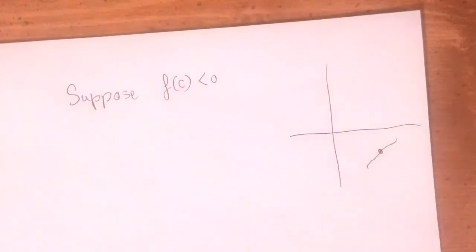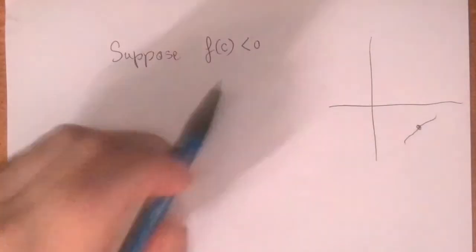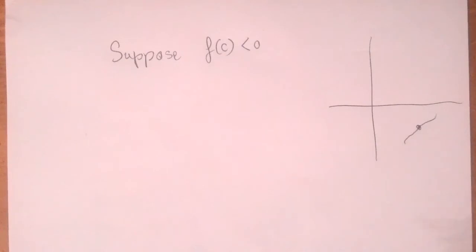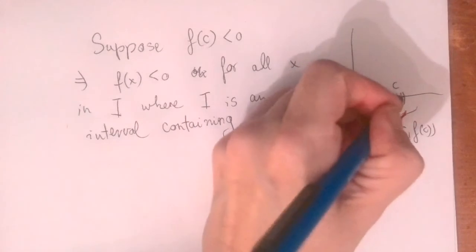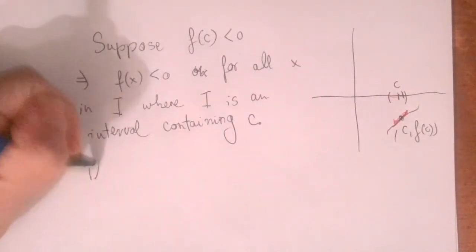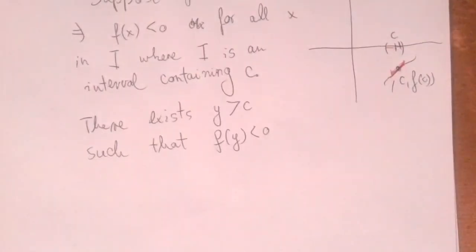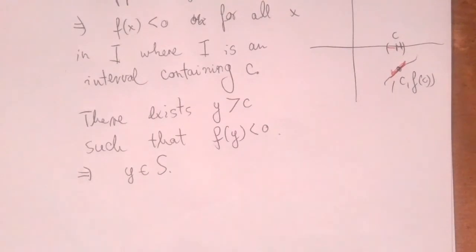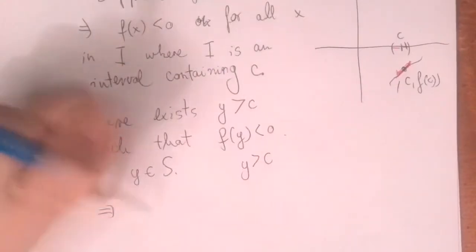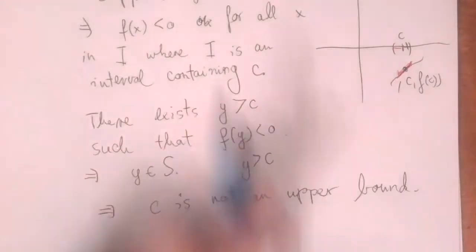Now what if f of c were negative? By a very similar argument, if f is continuous and f of c is negative, the function is negative on an interval containing c. We can find a number y within this interval that is greater than c, such that f of y is negative. But then y belongs to the set S, so c is not an upper bound at all — y is greater than c. Therefore, c is not an upper bound, and the function value at c cannot be negative.